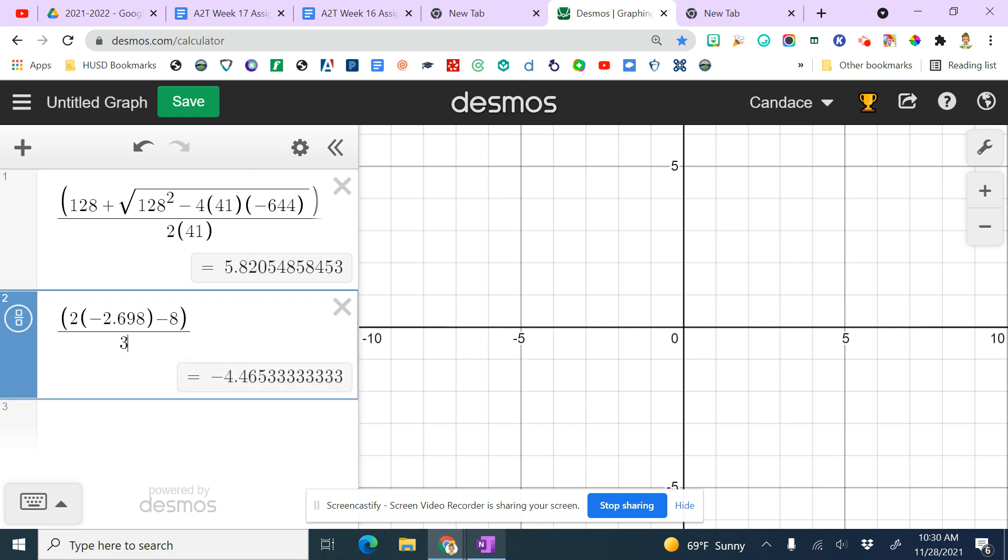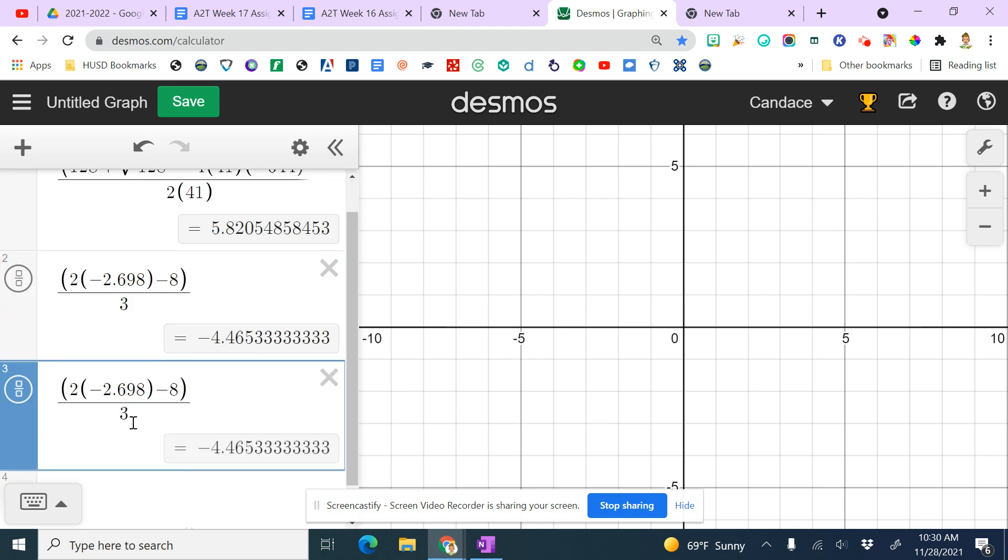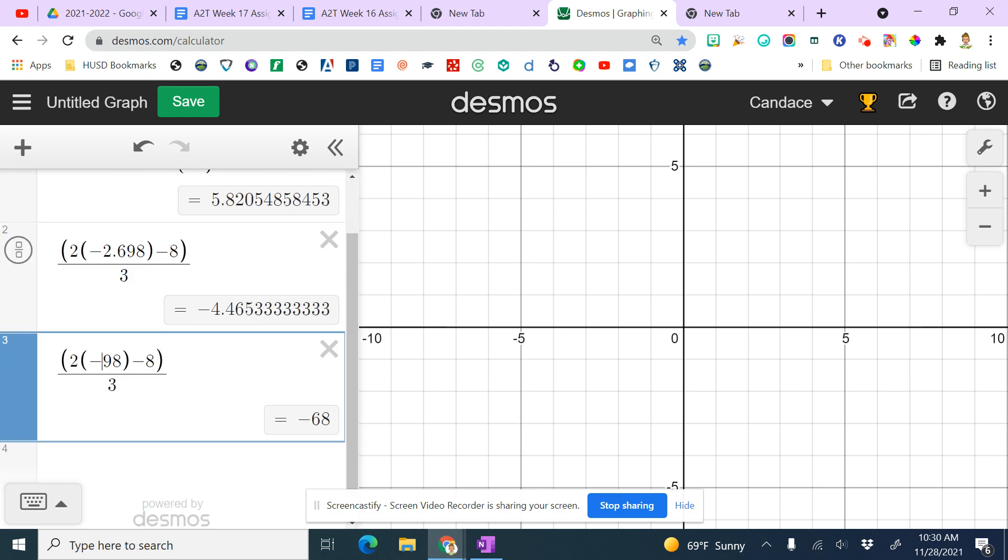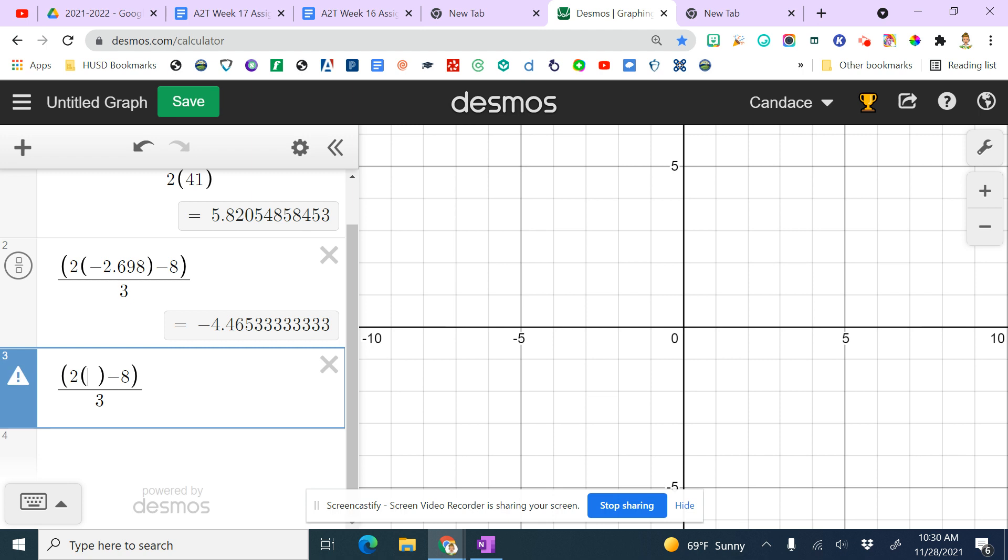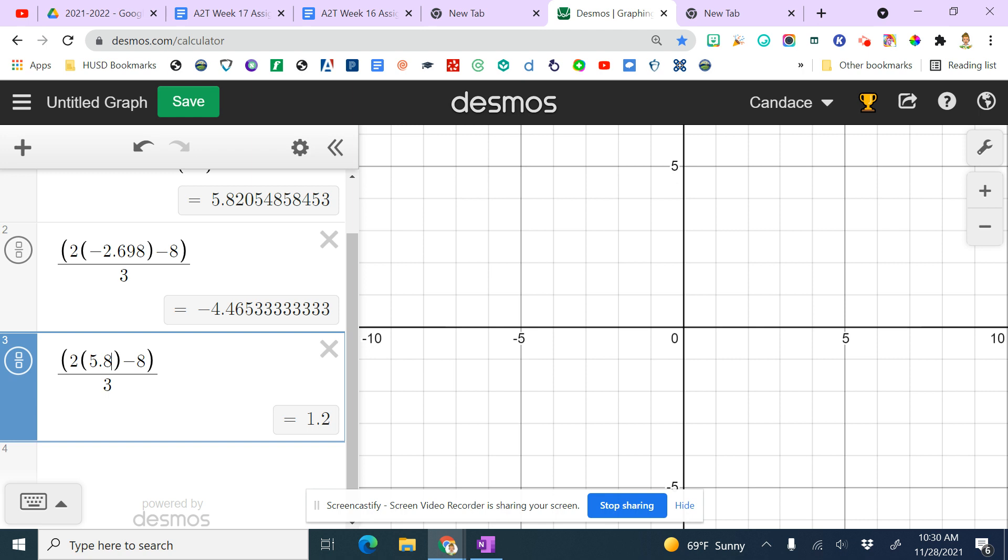So that is negative 4.465. And then I can change that number, copy it, control C, control V, and then change the number so I don't have to type it all in again. And this is 5.821 is what we rounded to.